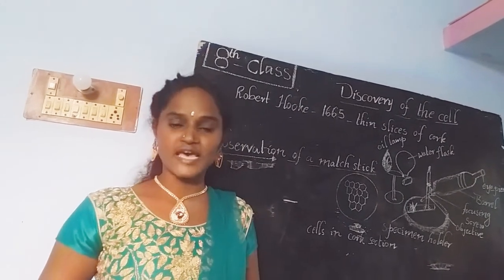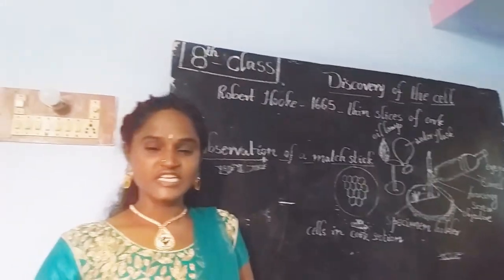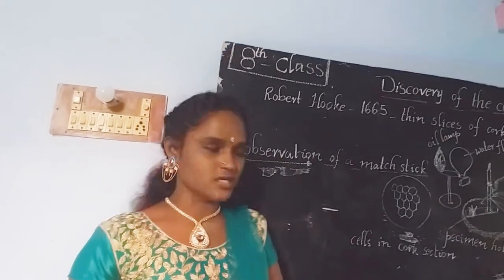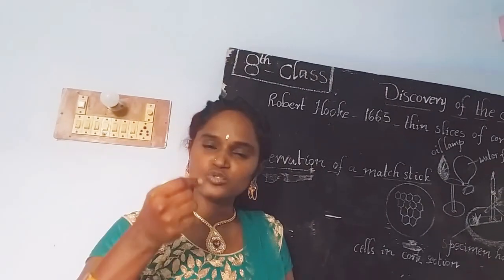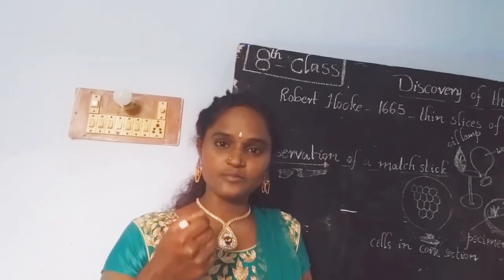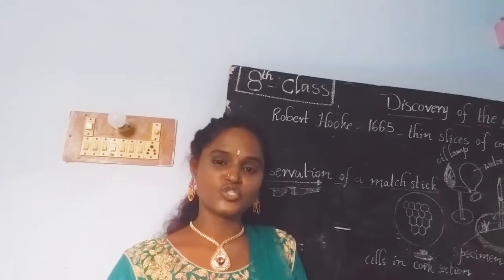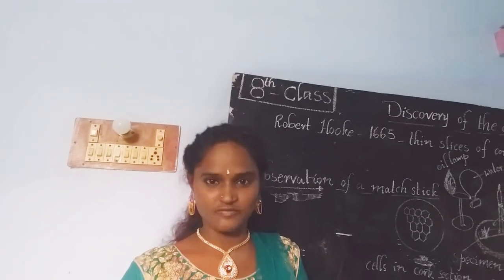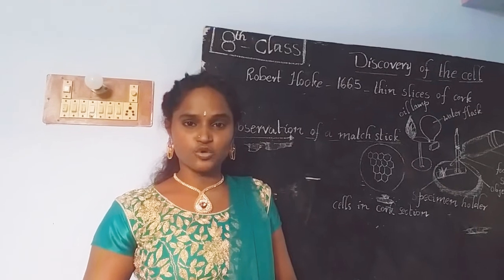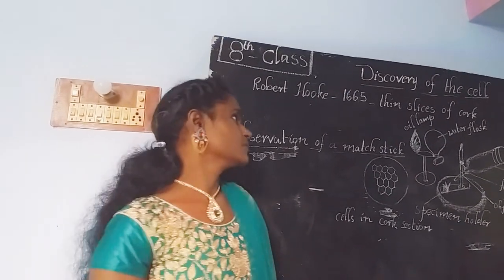The cork is also called as the oak tree. He cut the stem of the oak tree into thin slices and observed those slices under a microscope which was prepared by himself. By using that microscope, he observed the cells for the first time.